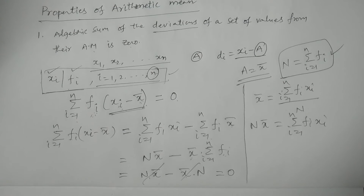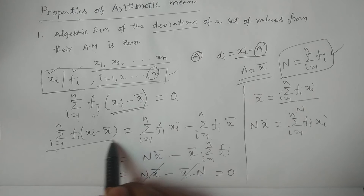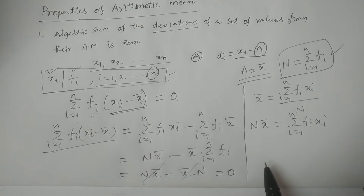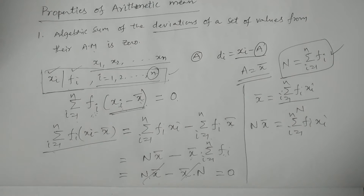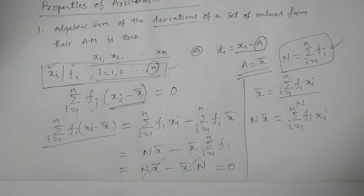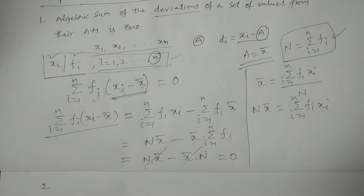So we have proved that summation fi into xi minus x̄ is equal to 0. That is, the algebraic sum of deviations of a set of values from their arithmetic mean is always 0. That is the first property of arithmetic mean.